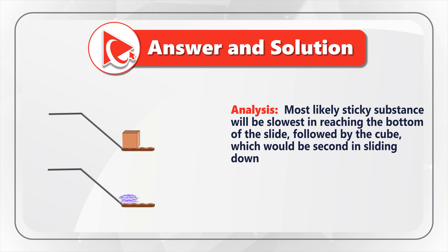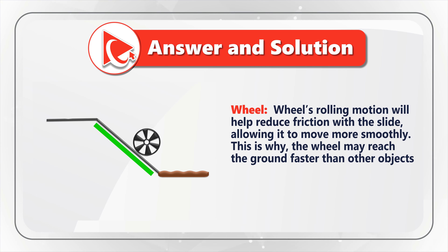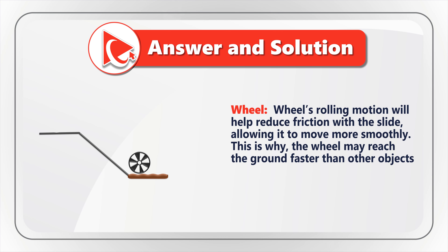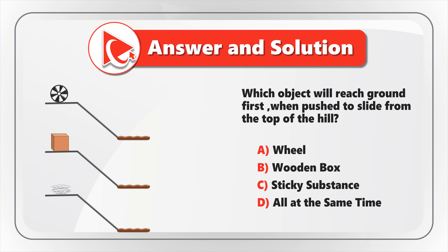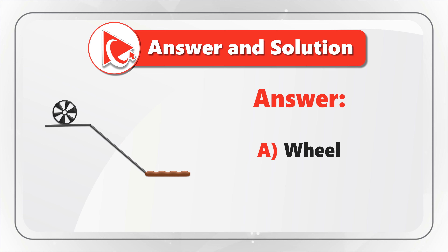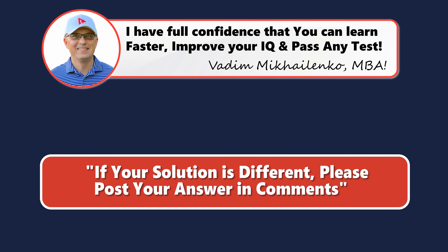As you might have guessed, I am putting my bets on the wheel. The wheel's rolling motion will help reduce friction with the slide, allowing it to move more smoothly. This is why the wheel may reach the ground faster than all other objects. The correct answer is Choice A, wheel, because the wheel will roll and have minimum friction to reach the ground. If you came to a different conclusion, please post your answer, solution, and rationale in comments so we can all learn.